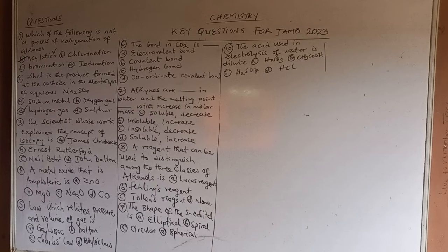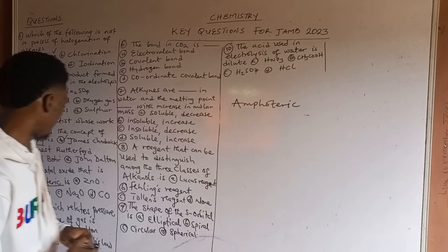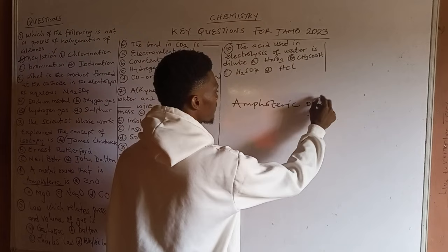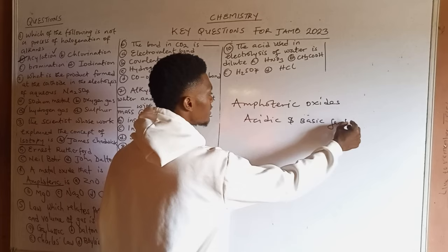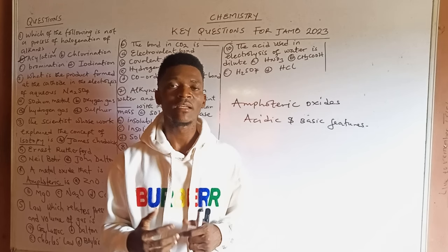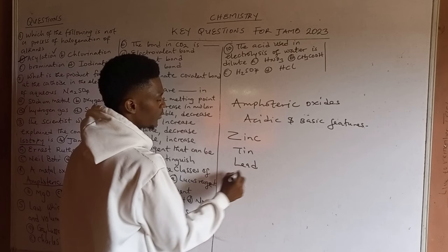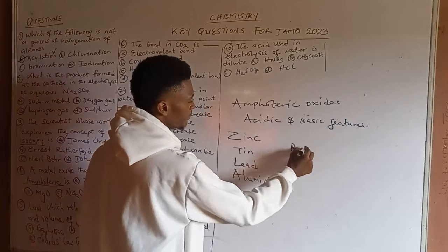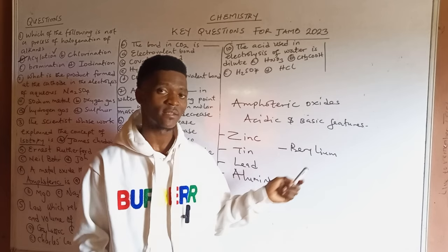Question 4: A metal oxide that is amphoteric. The keyword is amphoteric — amphoteric oxides possess both acidic and basic properties; they can behave as acids and also as bases. The unique metals that form amphoteric oxides are zinc, tin, lead, aluminum, and beryllium. So zinc oxide, tin oxide, lead oxide, aluminum oxide, and beryllium oxide are all amphoteric oxides.